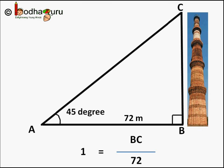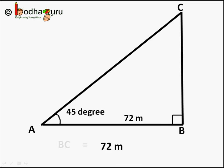So 1 is equal to BC by 72. So BC is equal to 72 into 1 which is 72 meters, which is the height of Qutub Minar.